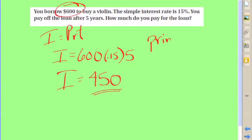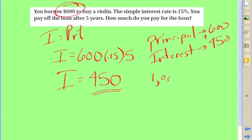So in order to get the total amount paid, well, you would add the principal, which was $600, plus $450 in interest that you paid for the loan, and you get a total of $1,050. So this ultimately was your total cost of buying the violin.